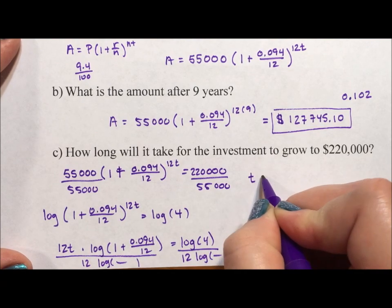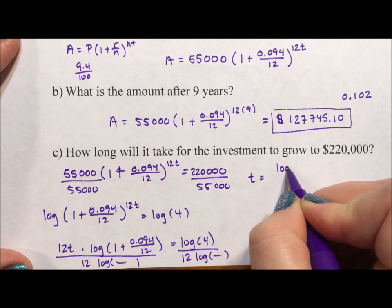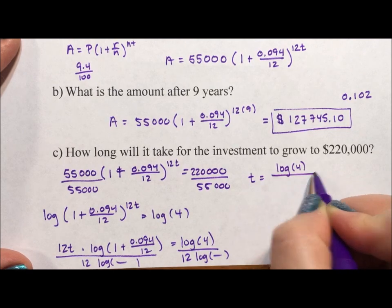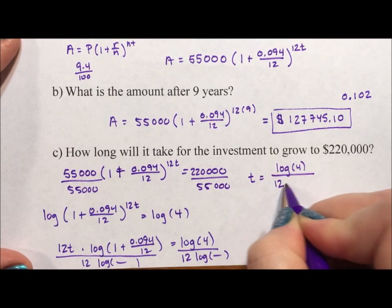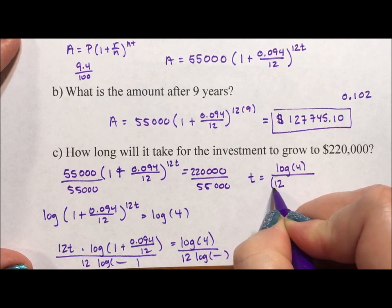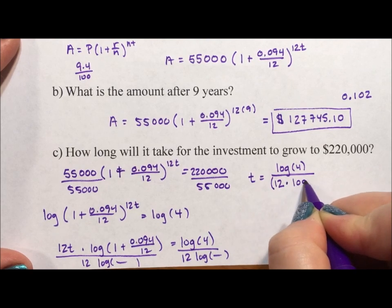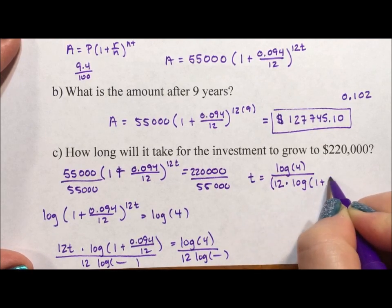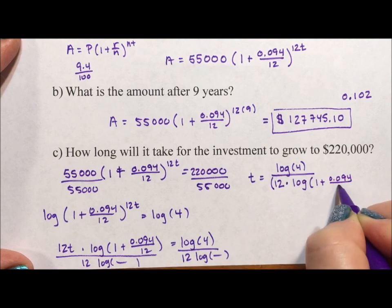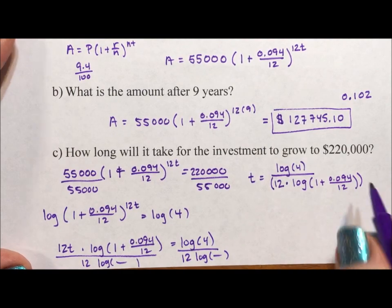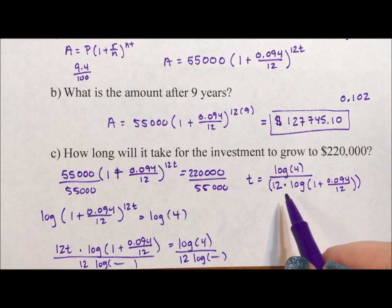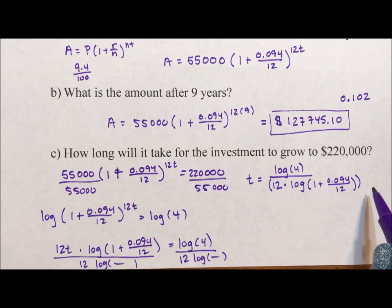I'm not rewriting all of this because it's a lot to write. And I'll just type it into my calculator. Make sure that when you type this into your calculator, you type log(4) with a closed parentheses divided by 12, either put this in parentheses, 12 × log(1 + 0.094/12), or you do divided by 12 divided by log of all of that.